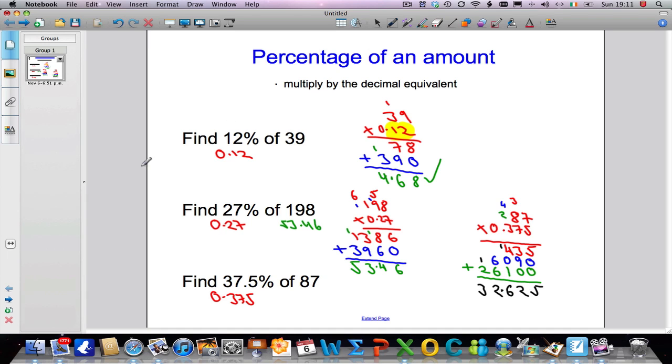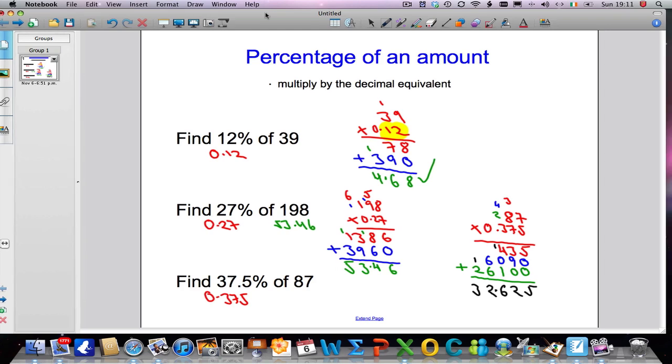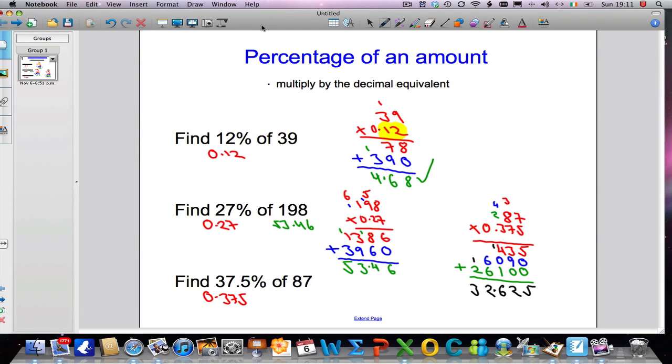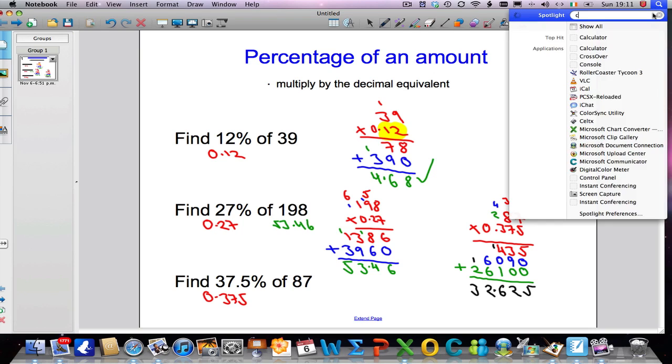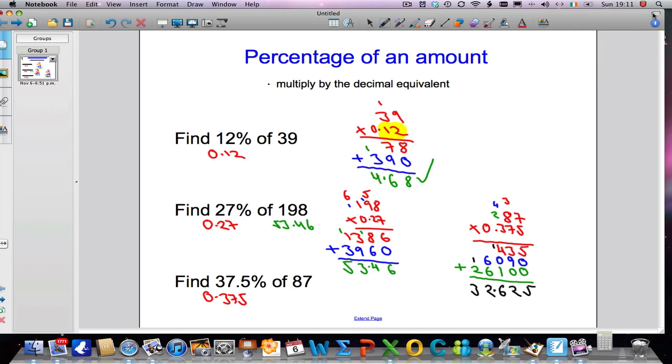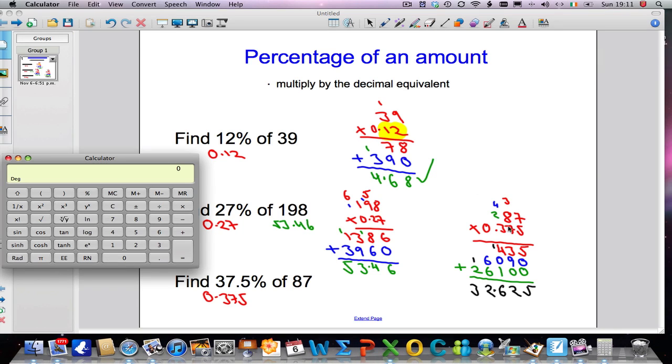And, let me see if I can pull up a calculator here and show you that this is correct. So, I'm going to do 87 times 0.375. So, 87 times 0.375. 32.625. Thankfully, all of my calculations were correct there, and my answer is correct.